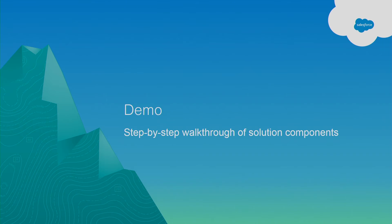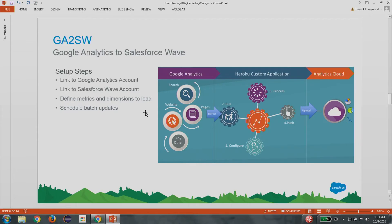So I'm going to turn things over to Derek now and he's going to walk through everything we just discussed. Thanks, Jason. I'll be walking through that first use case — combining your campaigns from Google Analytics and combining that with your Salesforce campaigns to see what kind of charts and dashboards we can build off of that. So the first step here is to get your Google Analytics data. You use the Google Analytics Salesforce Wave app. To set it up, you just have to link your Google Analytics account, provided that it has access to the Analytics API. Then you configure your Salesforce Wave account — your username, password, and security token.